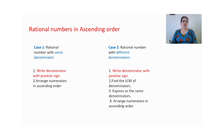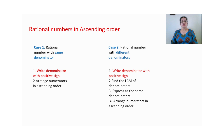The first case is rational numbers with the same denominators, and the second case is rational numbers with different denominators. For the first case, if the denominators are same, we change the denominator to positive sign and arrange the numerator in ascending order.